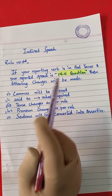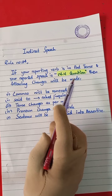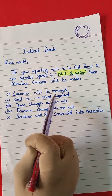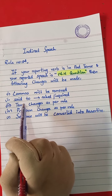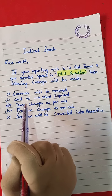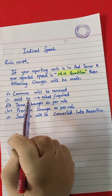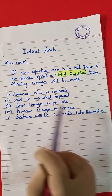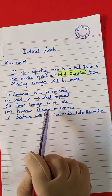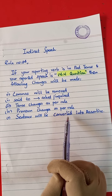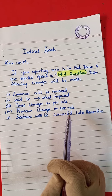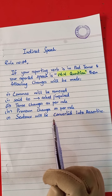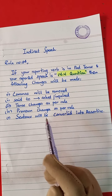In rule number four, if there is a WH question, we will not use 'if' or 'whether' in the indirect speech. Instead, we will keep the WH word. We will make tense changes as per rule, pronoun changes as per rule, and we will convert the sentence into assertive form. Now let's see some examples.